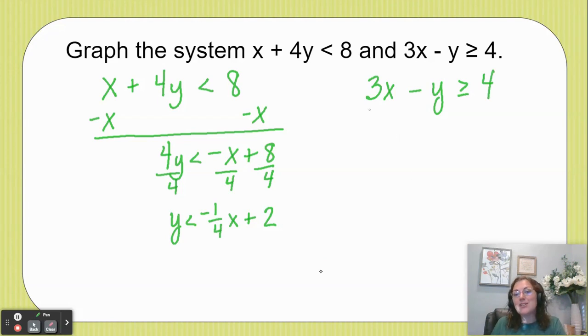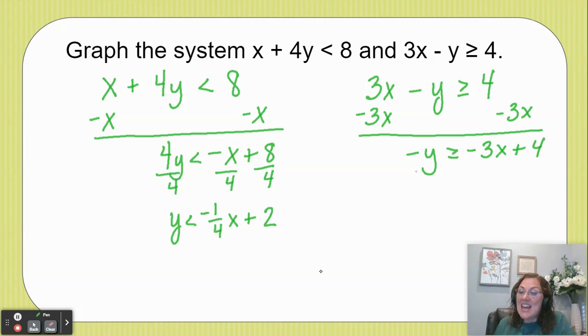So I'm going to move the 3x over by subtracting 3x, and that gives me negative y is greater than or equal to negative 3x plus 4. Remember I like to flip-flop mine. And here's the fun part: I'm going to divide by negative one.